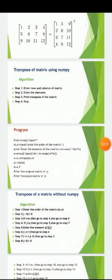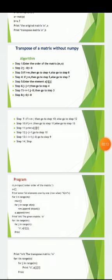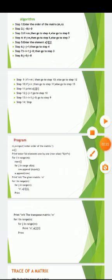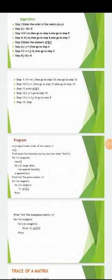Now, for the transpose of a matrix without NumPy: in step 1, enter the order of the matrix, that is m and n. In step 2, set j to 0 and i to 0. If i is less than m, go to step 4; otherwise go to step 8.